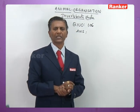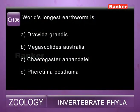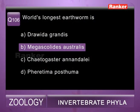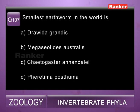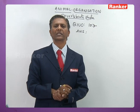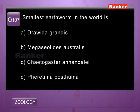Question 107: the smallest earthworm in the world is — a) Dravida grandis, b) Megascolides australis, c) Khetogaster annandalei, d) Pheretima posthuma. The smallest earthworm is Khetogaster. So 107th question correct answer is c.